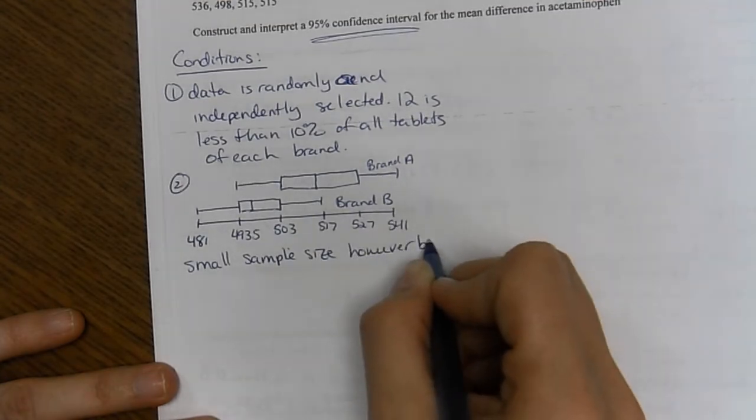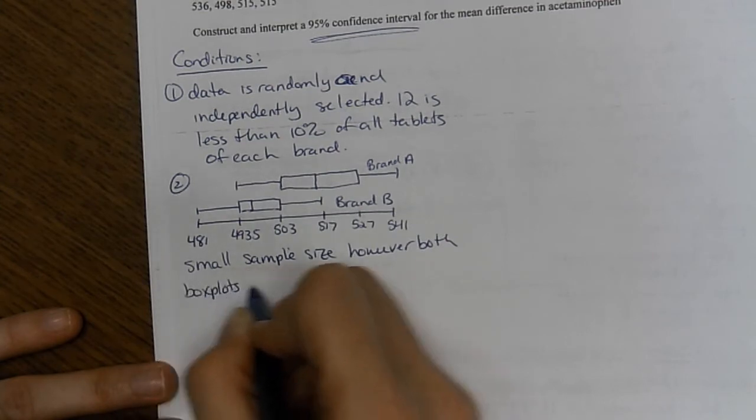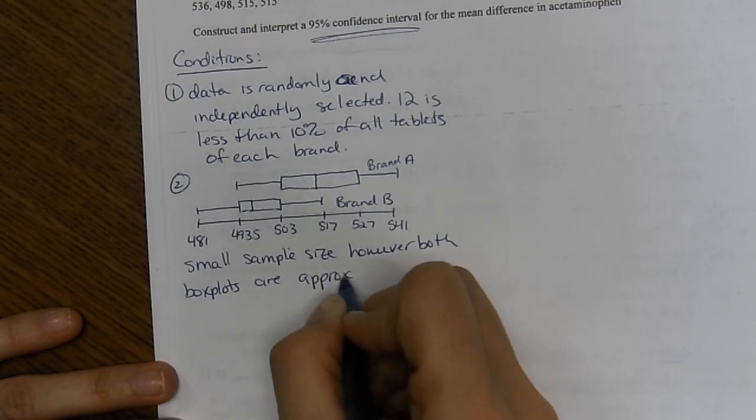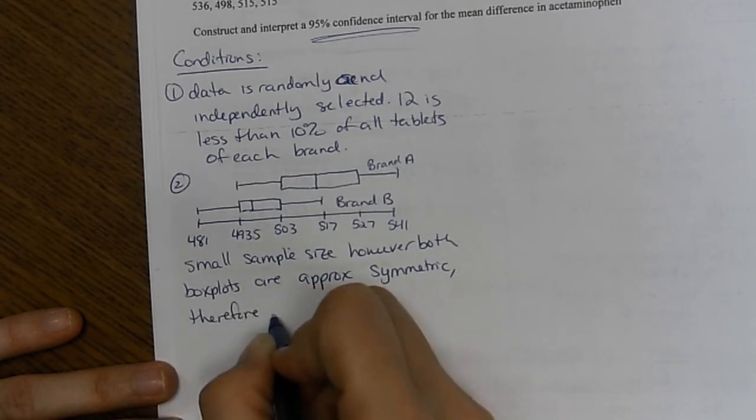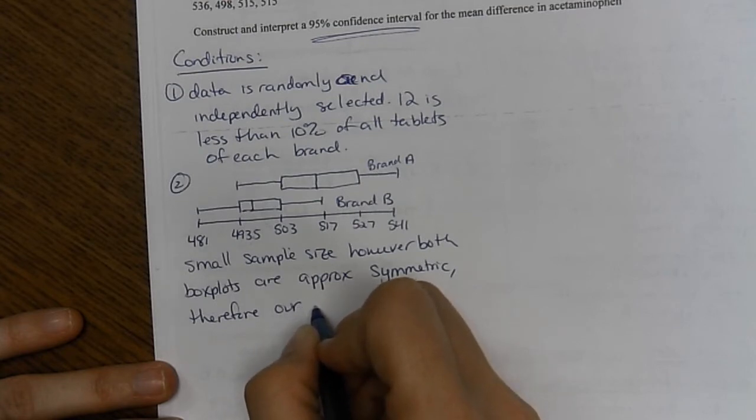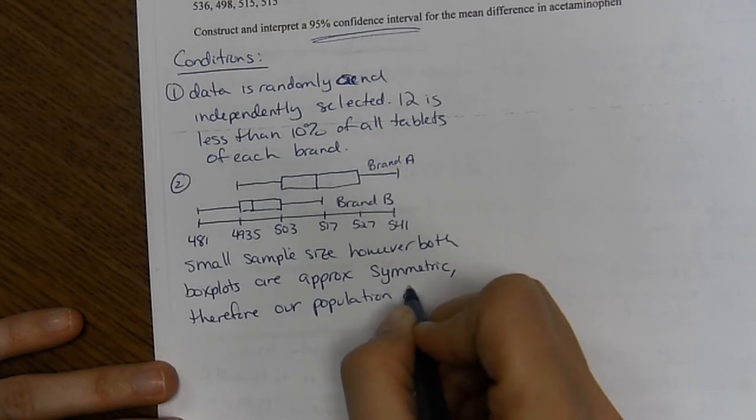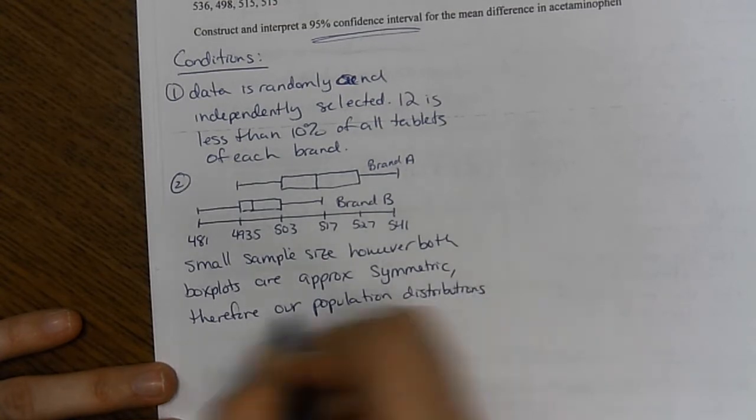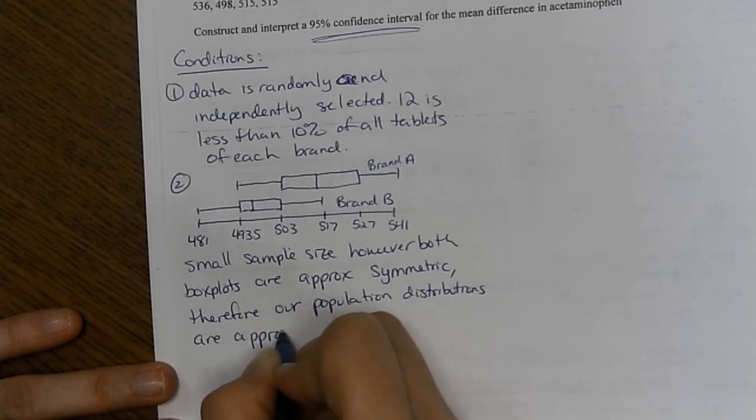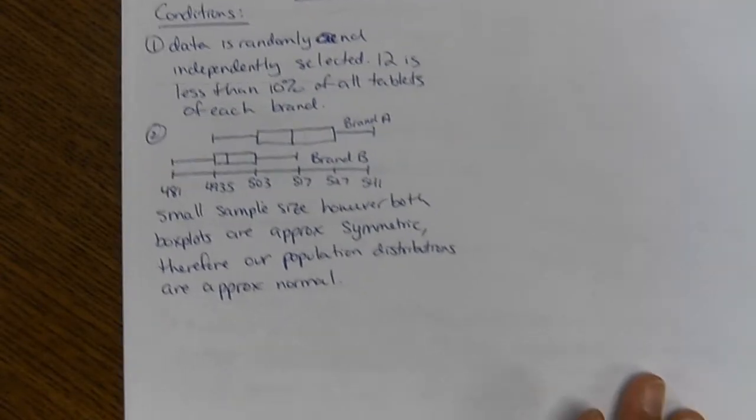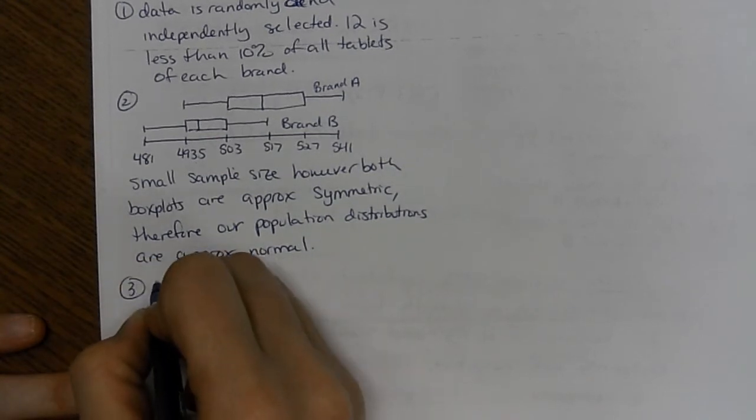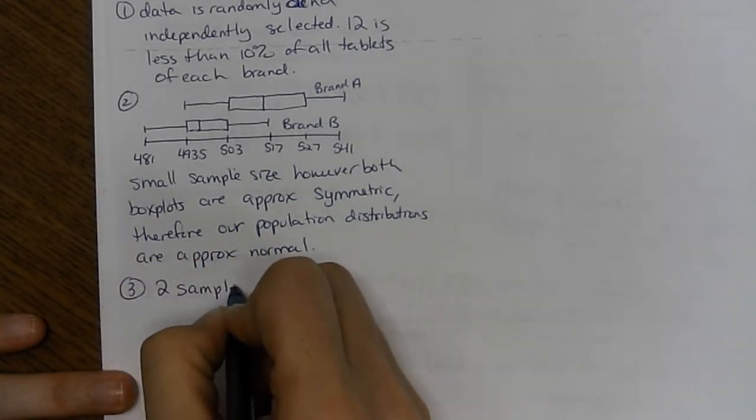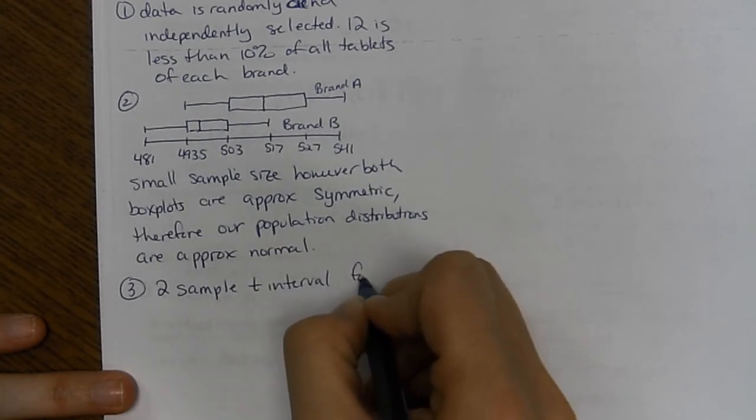So then we're going to write small sample size. However, both boxplots are approximately symmetric. Therefore, our population distributions are approximately normal. This is the only one that you're going to put plural population distributions because we have less than 12 from each population. We're not looking at the difference.